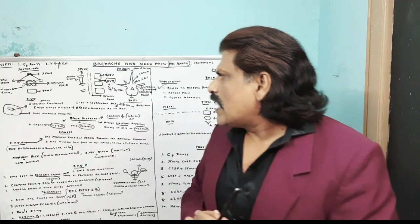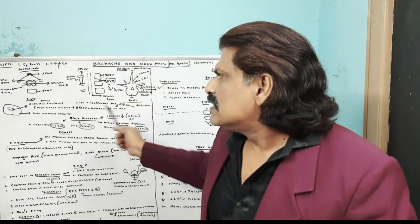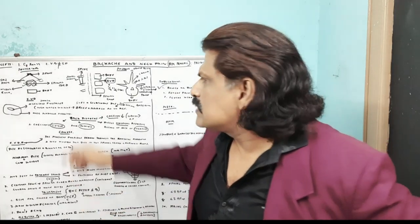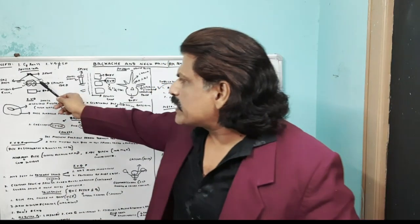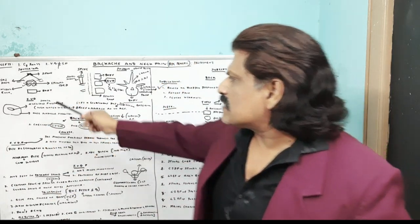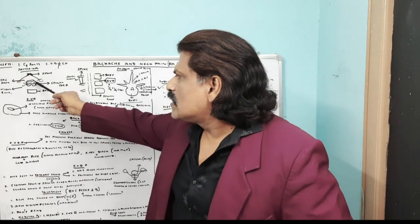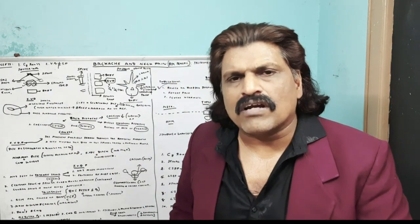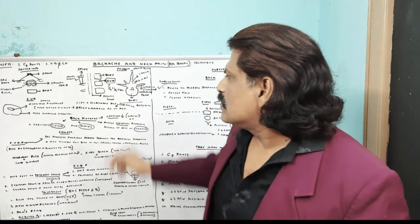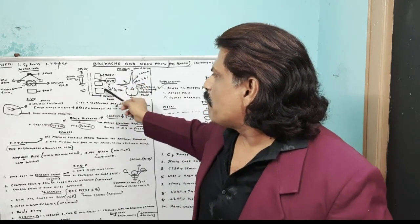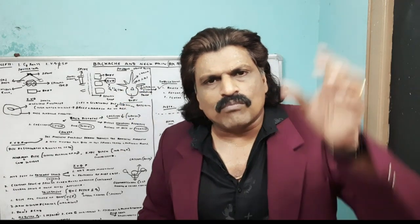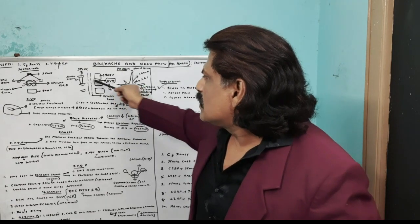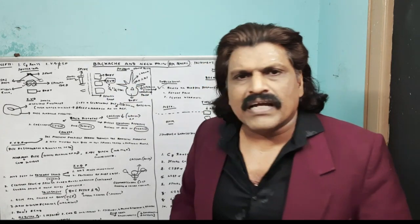Before going into disc prolapse details, some anatomy: from posterior to anterior, the posteriormost point is the spine, and the spinal cord is protected between the spine and the vertebral body anteriorly. The dorsal and ventral roots emerge from the spinal cord. A central disc prolapse affects the spinal cord; a lateral disc prolapse affects the root. The intervertebral disc forms approximately 25% of the total length of the spinal column.